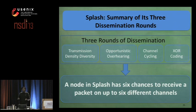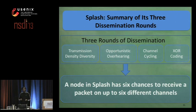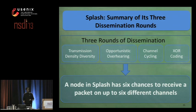In SPLASH, we have a total of three such rounds that disseminate the full data object. Given these three rounds incorporating our key techniques, a node in SPLASH has six chances to receive a packet.